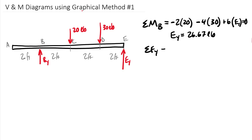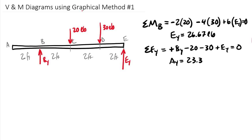Summing forces in the Y direction: B_Y minus 20 minus 30 plus E_Y equals zero. Substituting E_Y of 26.67, we find B sub Y equals 23.33 pounds. So B_Y is 23.33 and E_Y is 26.67 pounds.